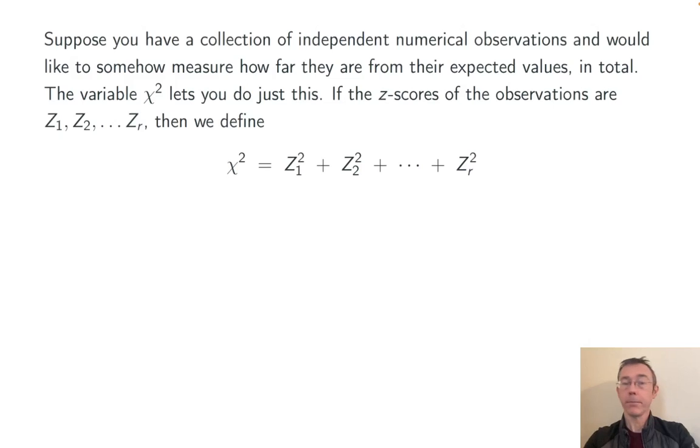A little bit more formally, what you do is you take each of your random observations and compute a z-score. So you subtract the expected value divided by the standard deviation, square each of those z-scores and add them all up. And that sum is going to be the random variable chi-squared, which is going to measure how far your observations are, in total, from the expected value.